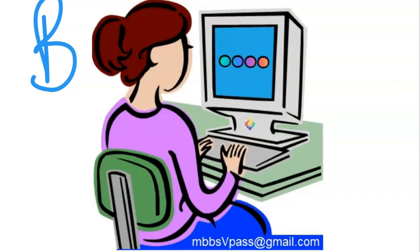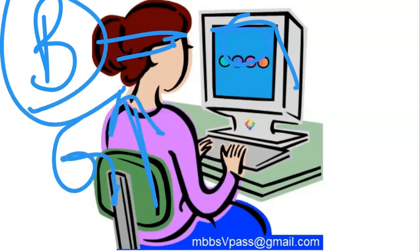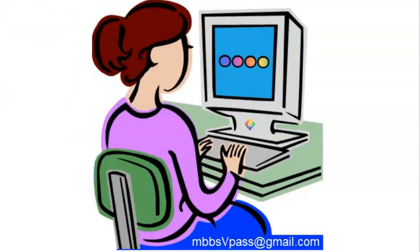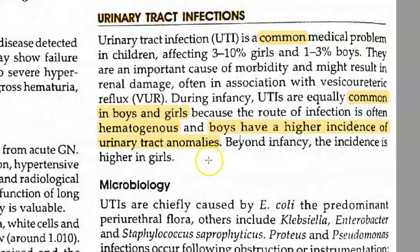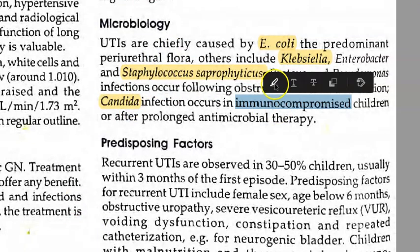Boys and girls will have equal rates in childhood, but later on, girls will have more UTI. If you rule out the anomalies in boys, then girls will have more. The organisms are standard like adults: E. coli, Klebsiella, Staphylococcus saprophyticus. It can be Candida in immunocompromised patients or if they've had too many antibiotics.